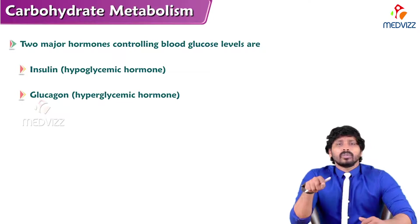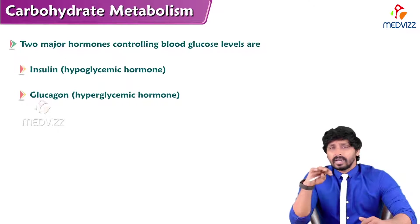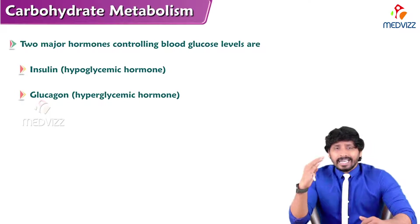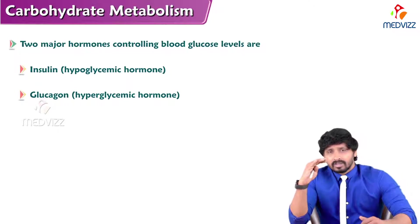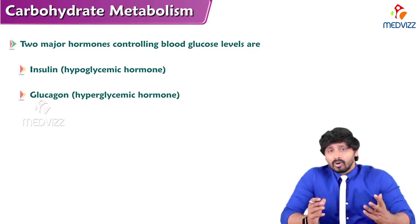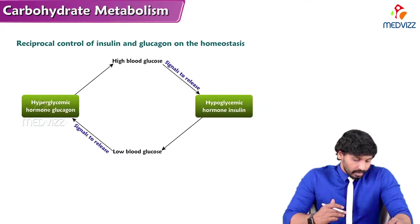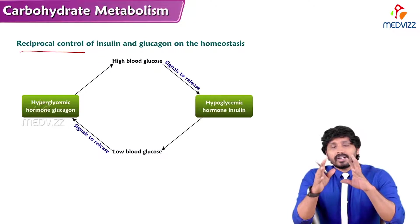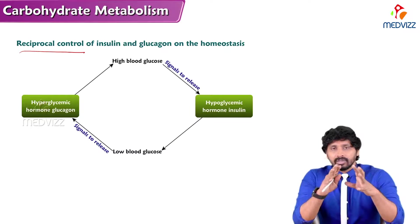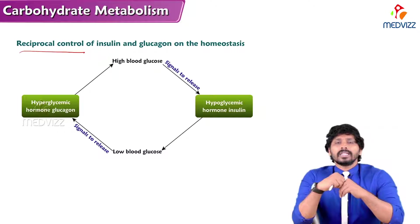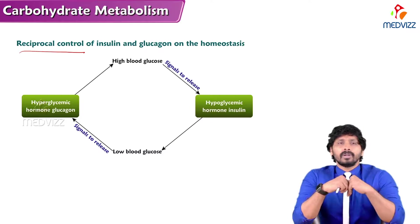Insulin tries to bring down blood glucose levels when there is excess glucose. Glucagon tends to increase blood glucose levels when levels go below the normal range. That is why insulin is known as the hypoglycemic hormone and glucagon is known as the hyperglycemic hormone. When blood glucose levels increase, there is a signal to the pancreas to release insulin; when blood glucose levels decrease below normal, glucagon comes into action.